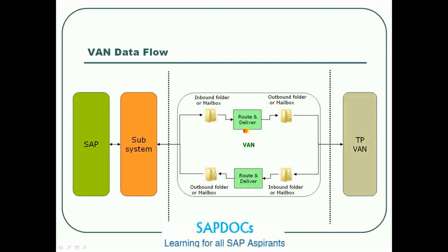Looking at the VAN diagram in more detail: we have SAP and the subsystem on our side, our VAN, and the trading partner VAN. When sending data out from SAP through the subsystem, the subsystem delivers to the inbound folder of your VAN. Your VAN picks up the data, routes it, and delivers to the outbound mailbox, from where your VAN pushes the data to the trading partner VAN. On the inbound side, the trading partner VAN sends data to your VAN's inbound folder. Your VAN routes and delivers to the outbound folder, from where it goes to your subsystem and eventually to your application.